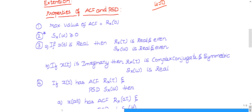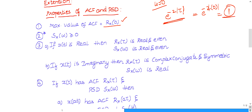Property 1: The maximum value of the autocorrelation function occurs when τ = 0. For example, in the previous question e^(−2|τ|), putting τ = 0 gives mod(0) = 0, so the answer is 1. So the maximum value of ACF is R_x(0).